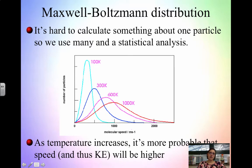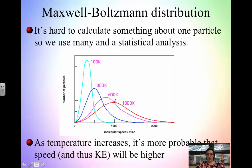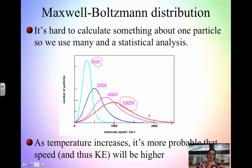Next we're going to look at the Maxwell-Boltzmann distribution. The reason we use this distribution is because it's hard to calculate something about just one gas particle, so we use a statistical analysis — a distribution graph like this. At higher temperatures, this red curve is at 1,000 Kelvin. Notice how broad this is — it comes all the way out to probably 3,000 meters per second versus the tiny peak, which really ends at about 1,000 meters per second. As temperature increases, it's more probable that the speed and kinetic energy will be higher, so the broader graph means the speed is going to be greater.